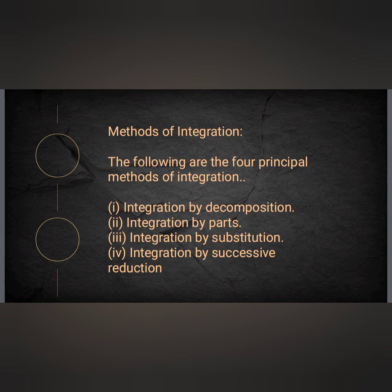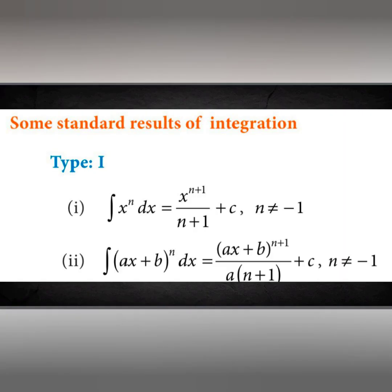Now we will see the types. First, Type 1: the standard results of integration. The very first important formula is ∫x^n dx = x^(n+1)/(n+1) + c, where n ≠ −1 and c is the integration constant. The second formula is ∫(ax+b)^n dx = (ax+b)^(n+1) / [a(n+1)] + c, where n ≠ −1.